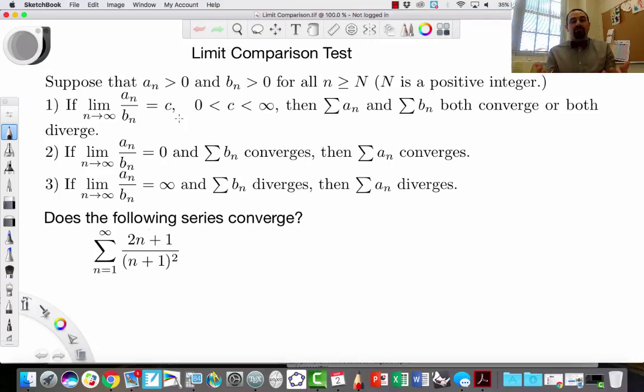This is like that relative rates of growth that we did earlier. If the limit is a constant, then they grow at the same rate. And therefore, for us, that means that they either both converge or they both diverge. And that's really the Limit Comparison Test.